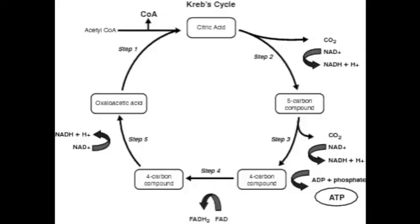In the Krebs cycle, the main goal is to create electron carriers. You put in acetyl-CoA, three NAD+, and one FAD. In the first step, acetyl-CoA enters the Krebs cycle by bonding with four-carbon oxaloacetic acid to form a six-carbon citric acid. From there, a redox reaction occurs: citric acid is oxidized, it loses a carbon, and NAD+ is reduced into NADH. In the next step, another redox reaction occurs and the five-carbon compound is oxidized, reducing NAD+ into NADH again.